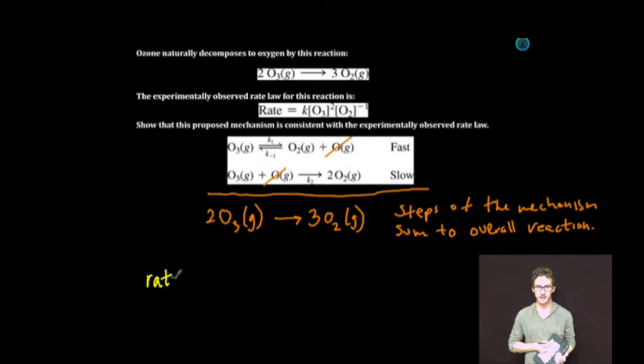the rate law could be written as my rate constant K times the concentration of ozone to the first order times the concentration of O to the first order. Again, those orders can be determined directly from the stoichiometry because it's an elementary step.